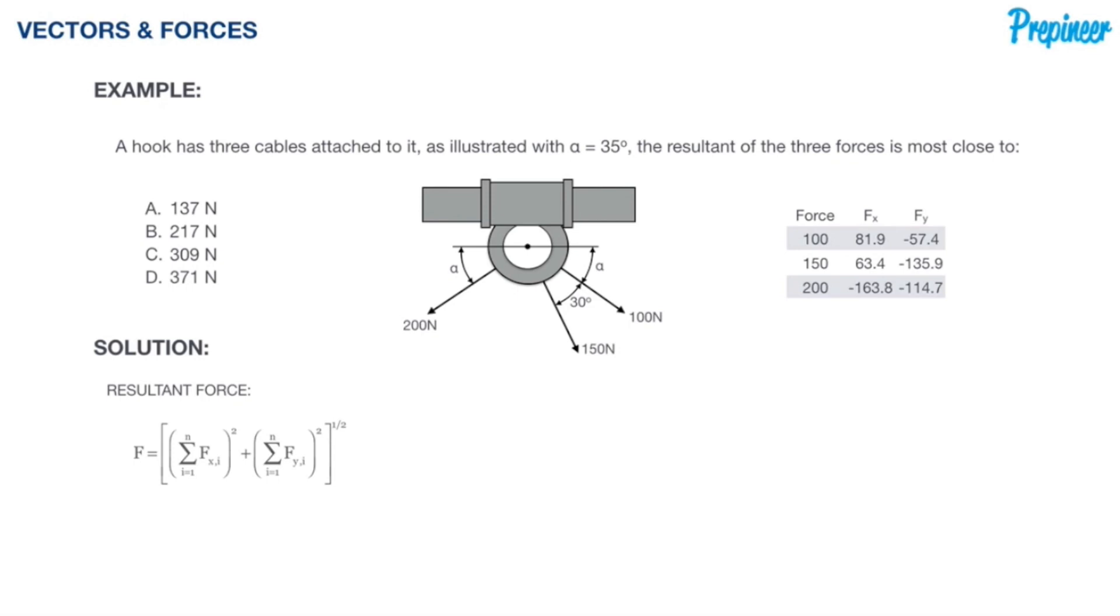All this formula is really telling us is to take all of our x components of each of the forces, add them up, and then we're going to square the result. Next we will take all the y components, we'll do the same, sum them, square the result. We add both of those values up, both of those squared values, and then we take the square root. The result will be our resultant force or the net action of the system of forces that we're working with in this particular problem.